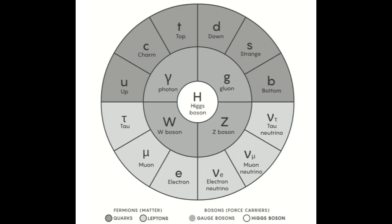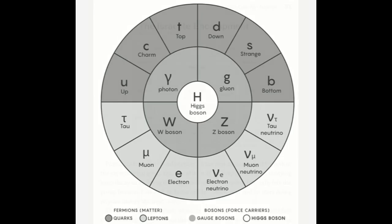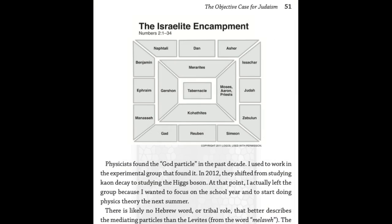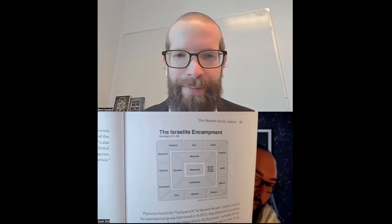So you talk about the Higgs boson. Can you explain this that you have here — the carrier particles? Tell me what we're looking at here. We're looking at the Higgs boson and then the force carriers, and then we have different types of quarks and leptons here. And then you connect it with the Israelite encampment. Can you explain all this?